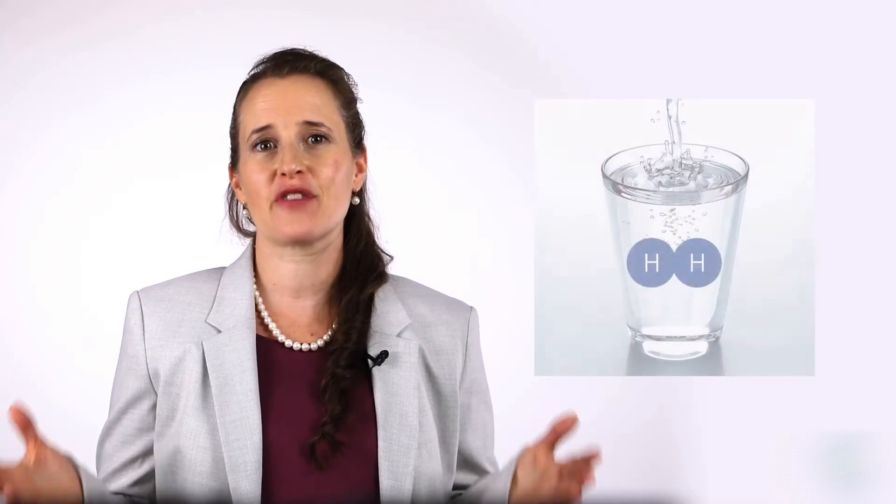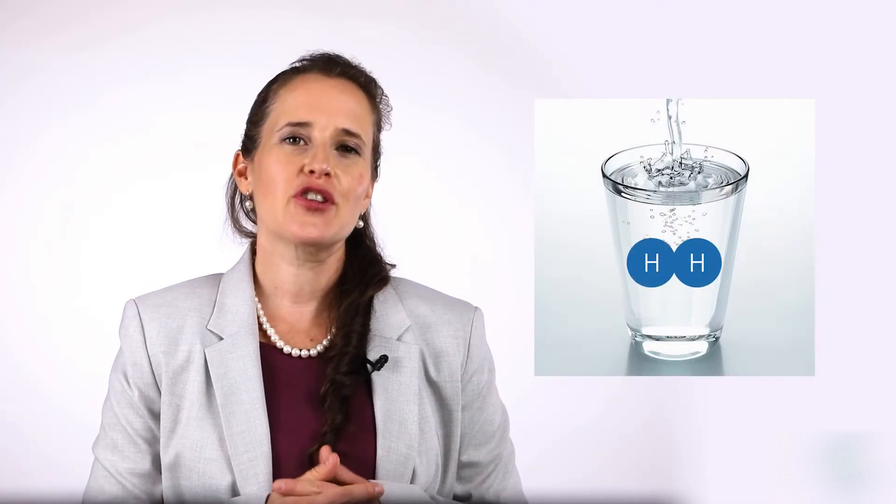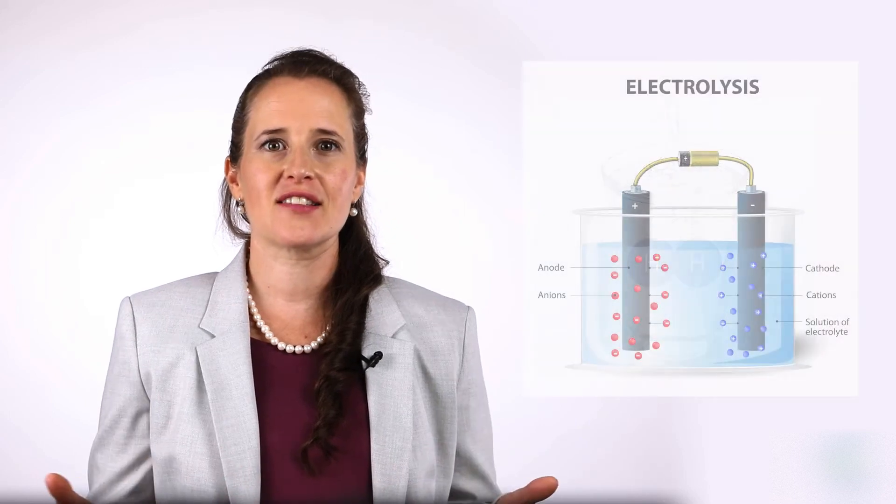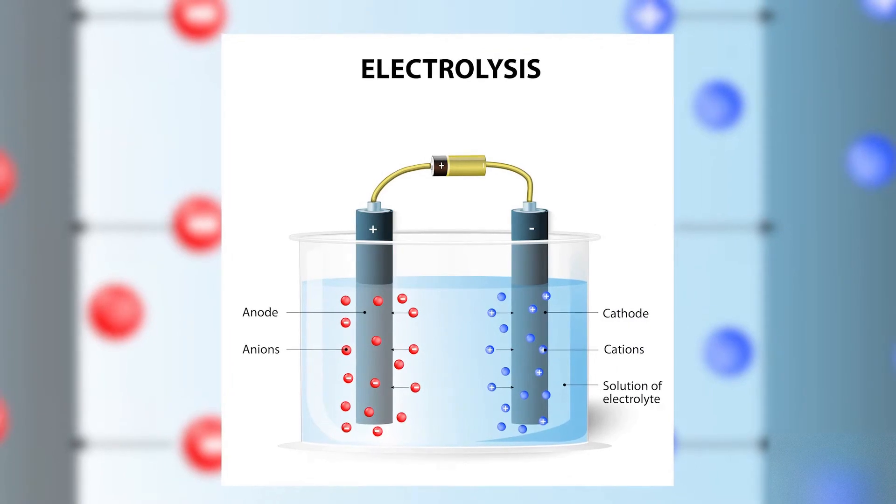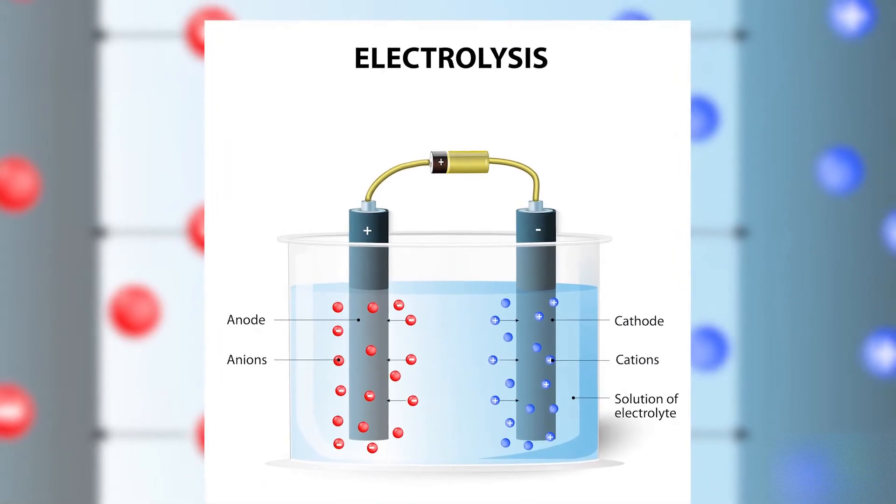You might be wondering, how do you make hydrogen-rich water? Hydrogen water is made by water electrolysis. It is the process of using electricity to split the water molecule into its parts of hydrogen gas and the hydroxide anion.